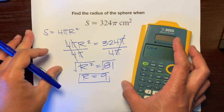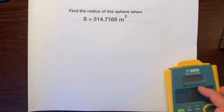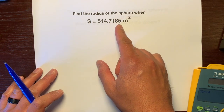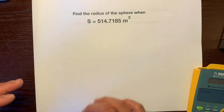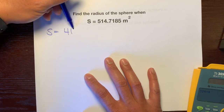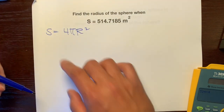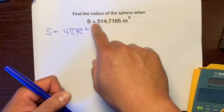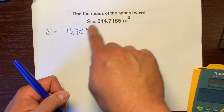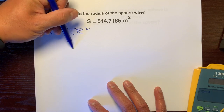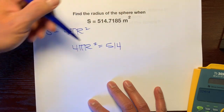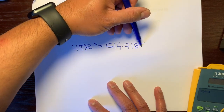Now let's do another example. Let's find the radius of the sphere when the surface area is 514.7185 meters squared. So let's write the formula again: S equals 4 pi r squared. This surface area equals S, so we can set them equal to each other: 4 pi r squared is equal to 514.7185.